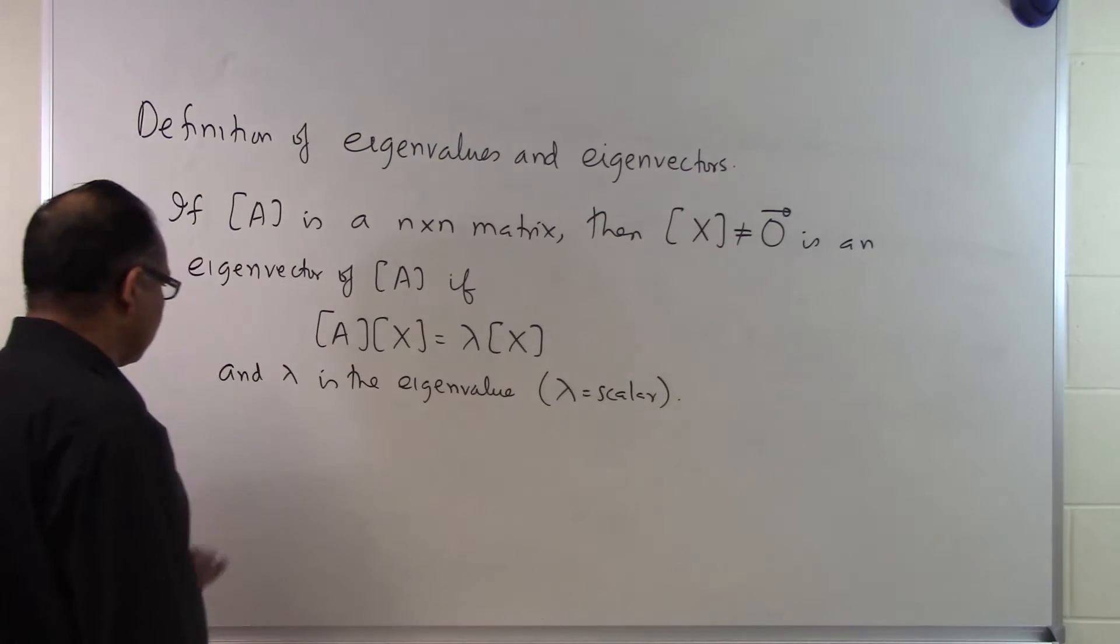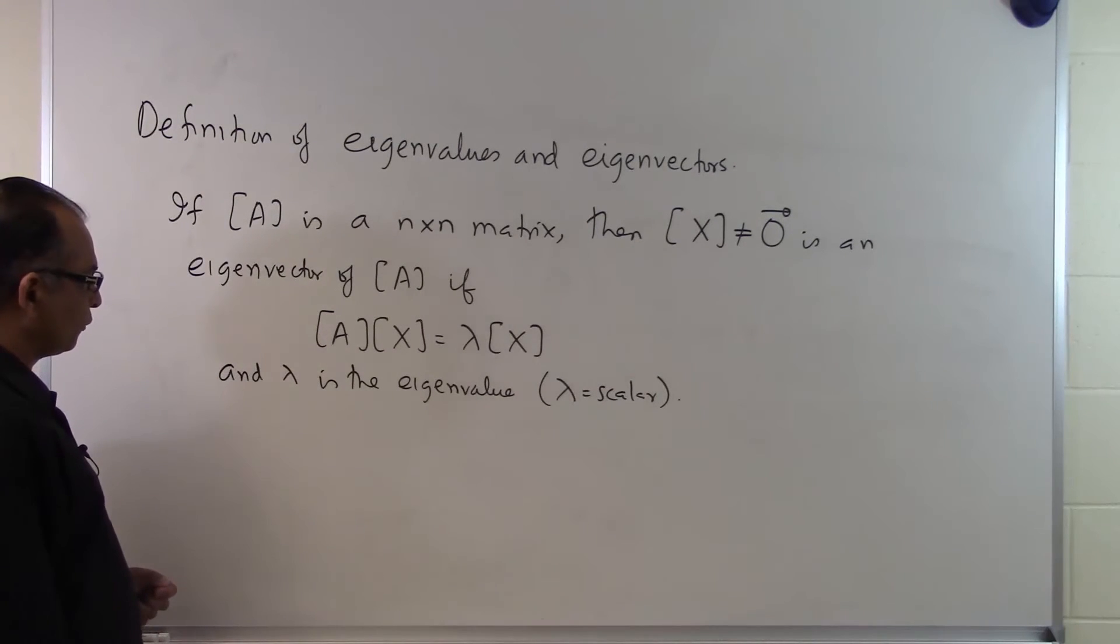So you can get different eigenvalues for an n by n matrix. So if you have an n by n matrix you will get n eigenvalues and corresponding to each eigenvalue you will have an eigenvector.